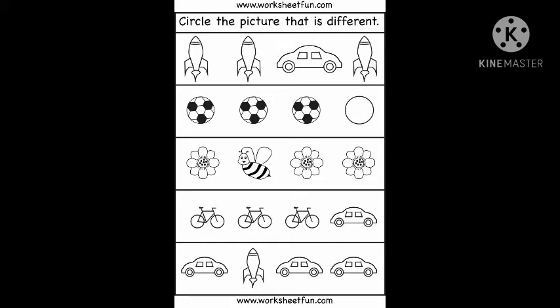Let's see how we will do this activity. In the first row you can see three missiles and one car. So which one is different? Yes, the car is different. So we will circle the car.